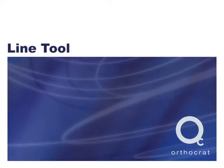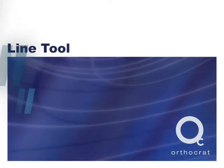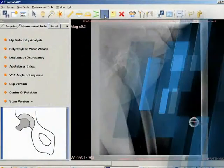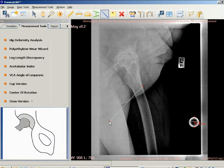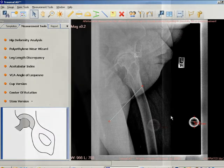Line tool. Use the line tool to draw a line on the image. No measurements are associated with this line. To use the line tool, click on the line tool icon in the toolbar.